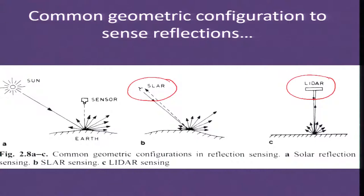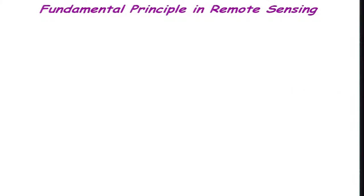These are a few sensors we discussed last time which are most commonly used: SLAR, which is side-looking airborne radar, and LIDAR, which is light detection and ranging. Coming to the fundamental principle of remote sensing, as we have been discussing, different materials will have different spectral curves.